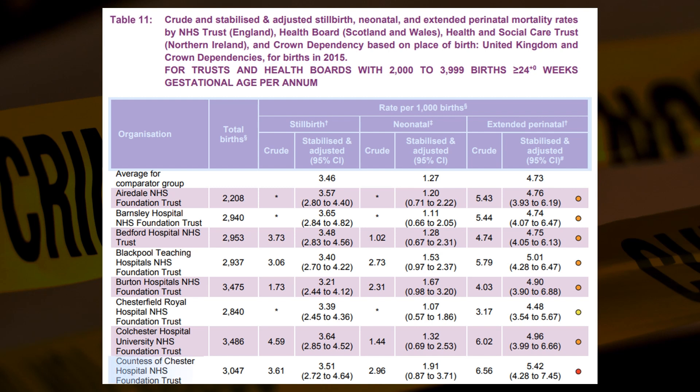At the bottom of the page we have the Countess of Chester Hospital, and we can see the 2.96 crude mortality rate which was noticed by staff at the hospital and began the series of events which ultimately led to Lucy Letby receiving 15 life sentences in 2023. Every mortality stat I've seen quoted around this case has always been from the crude data only, with no attempt to adjust for risk — so let's use the crude data to see what bad statistics we can come up with.